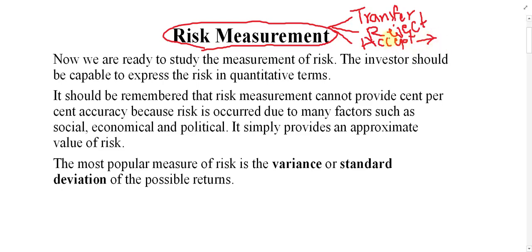You can transfer, reject, or accept risk, but you cannot do any of these unless you first measure the risk. Measurement of risk means we have to express the risk in terms of percentage or amount. When someone says 'more risk' or 'less risk,' we need to find out specifically — for example, a risk of 10%.